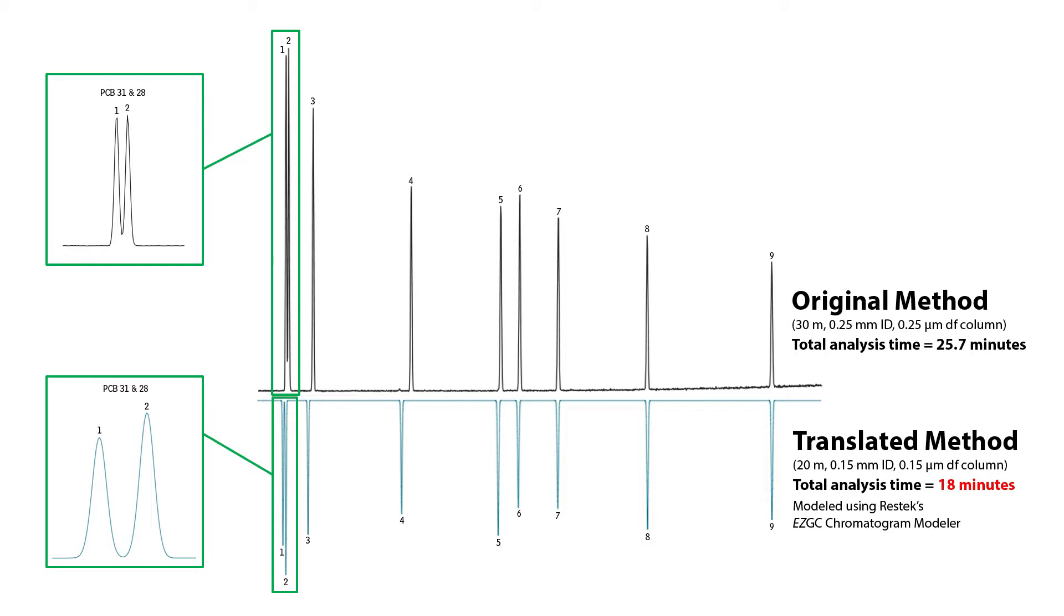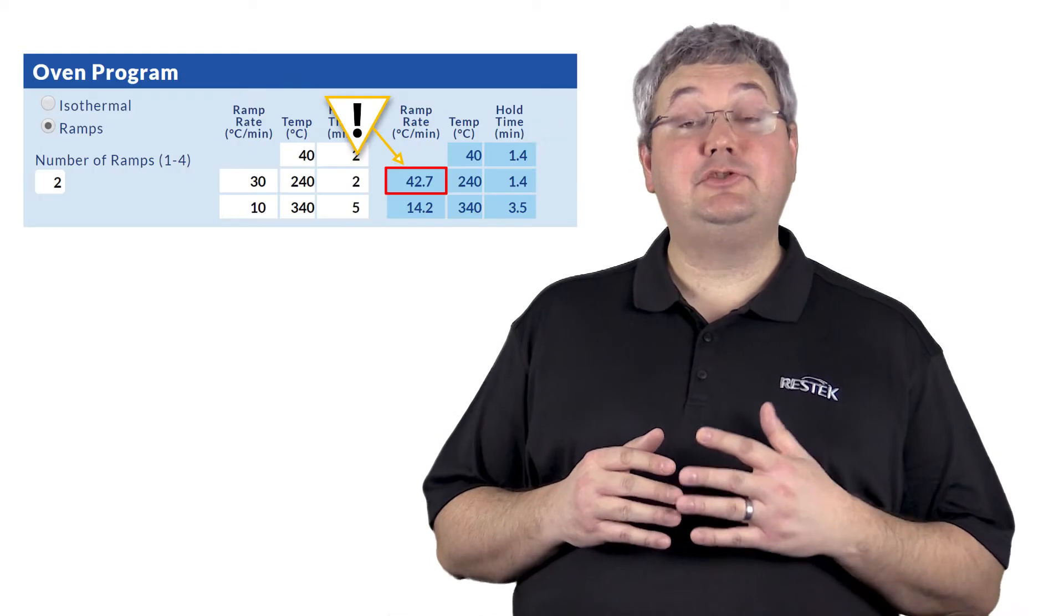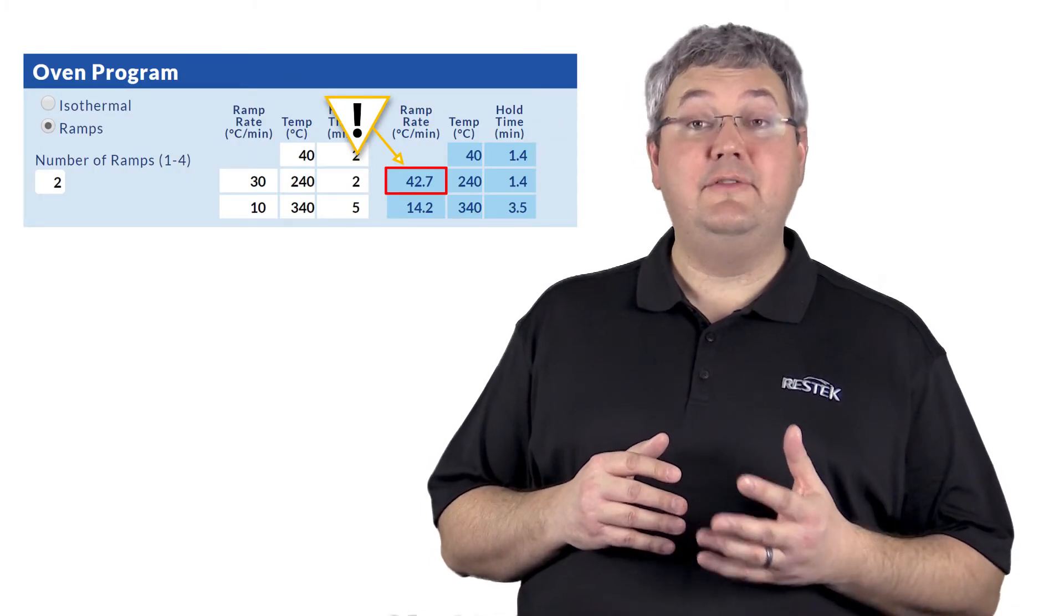Put simply, this change would allow an instrument to complete a sequence of samples that normally would take eight hours in a little more than five and a half hours. Note that the translated method calls for oven ramp rates that a standard GC oven may not be able to achieve.